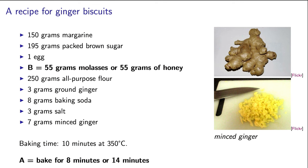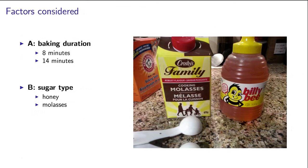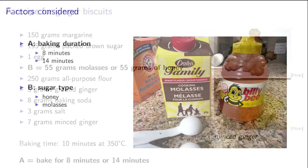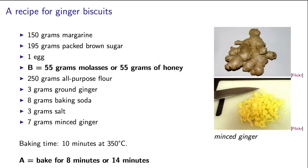So back to those ginger biscuits. The two factors that were considered were the baking time and the type of sugar. Here's the recipe for you. The baking time values that the student used were eight minutes and fourteen minutes. And for the type of sugar, she chose either molasses or honey. All other settings for the recipe were left as shown here on the screen.